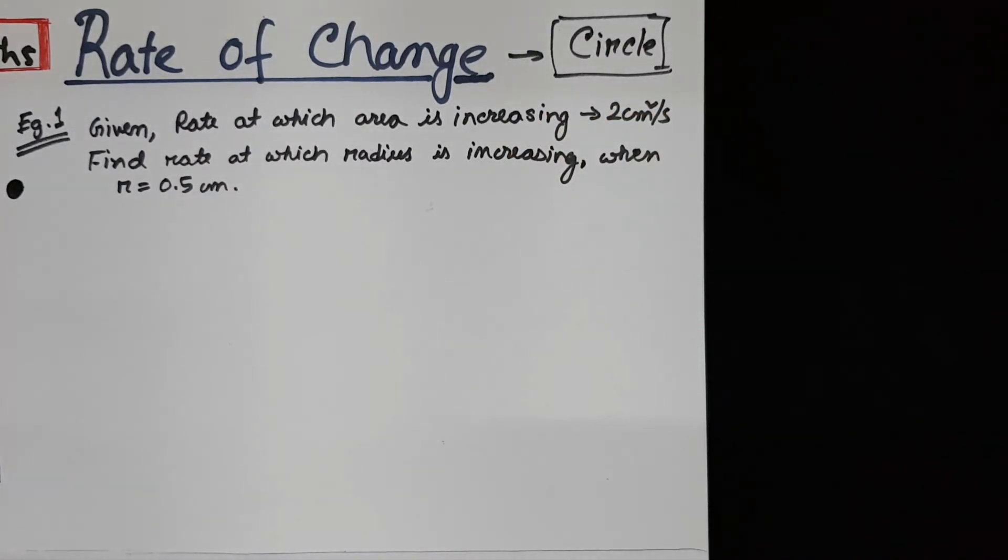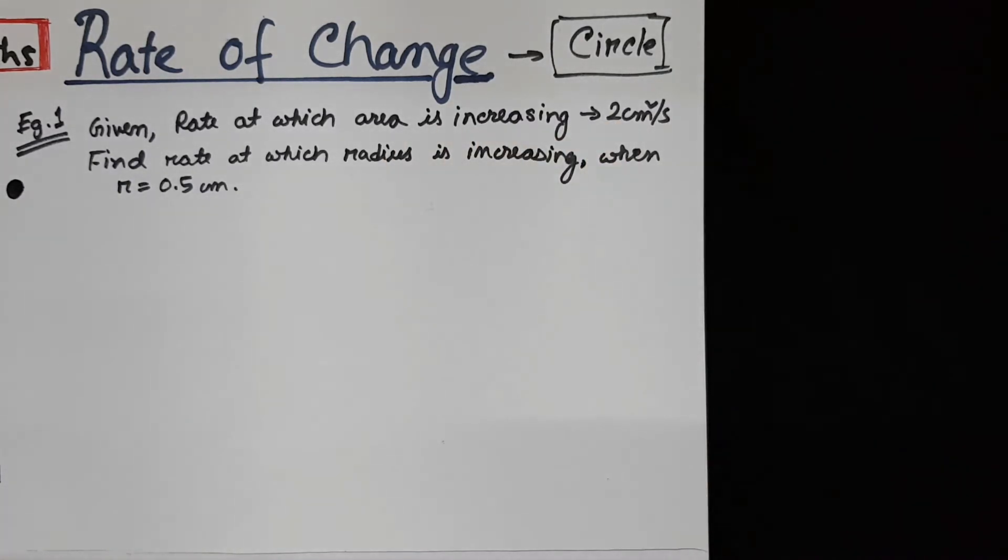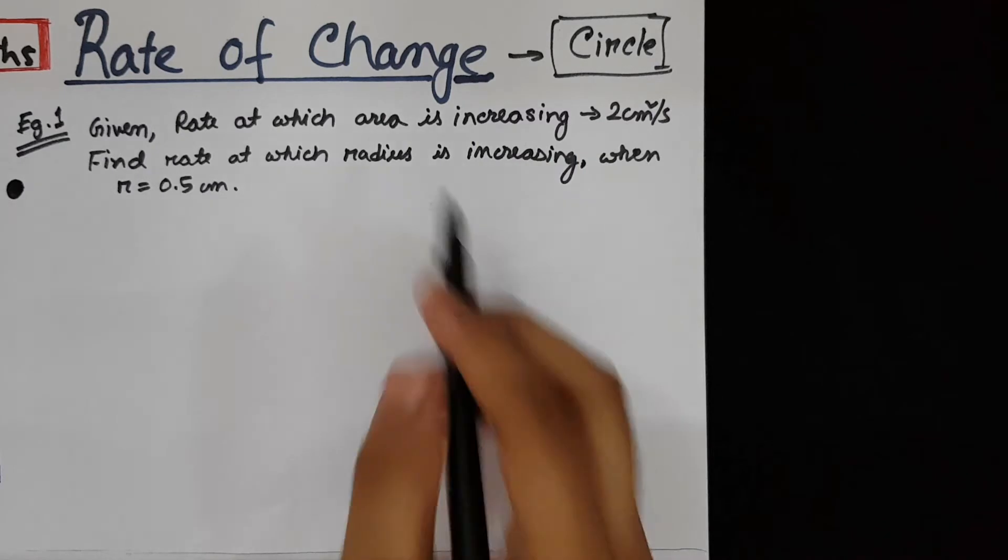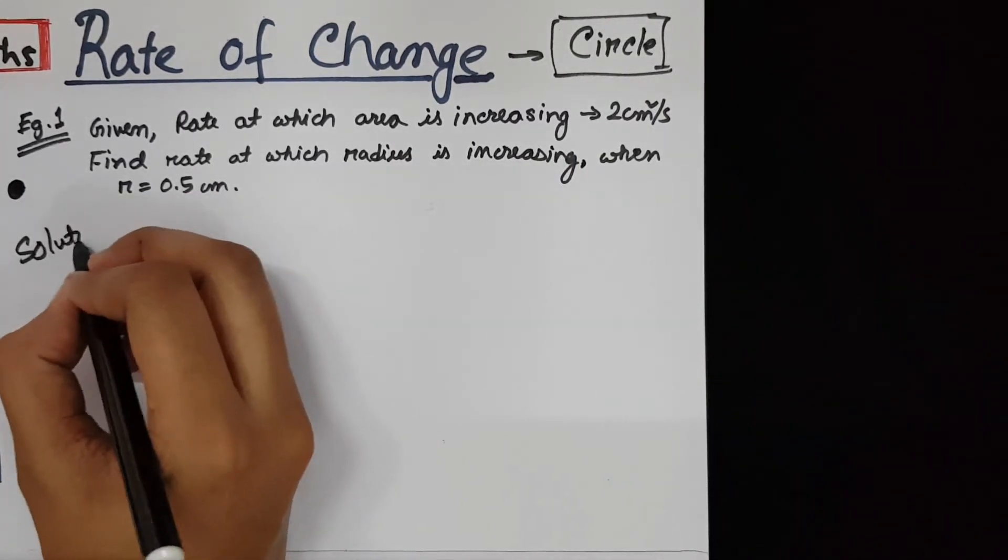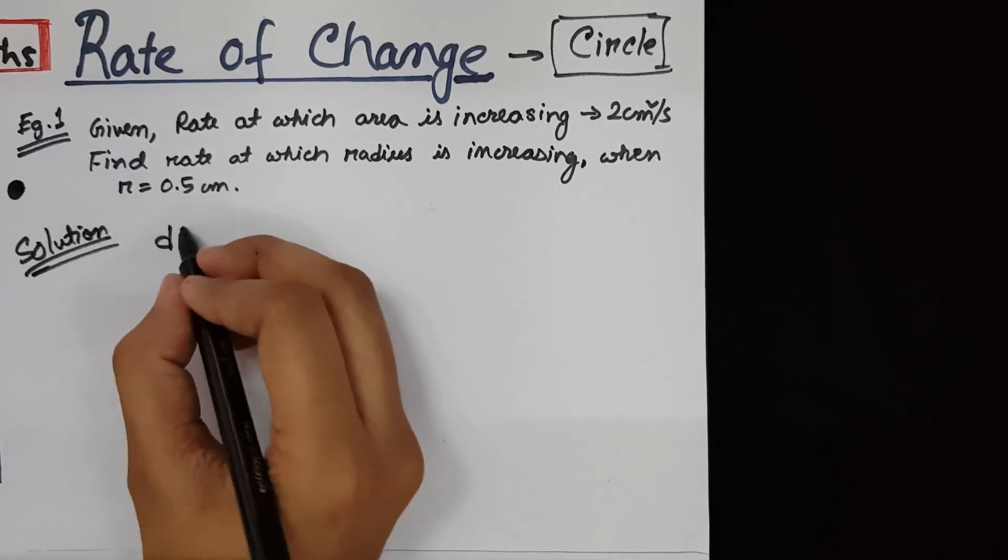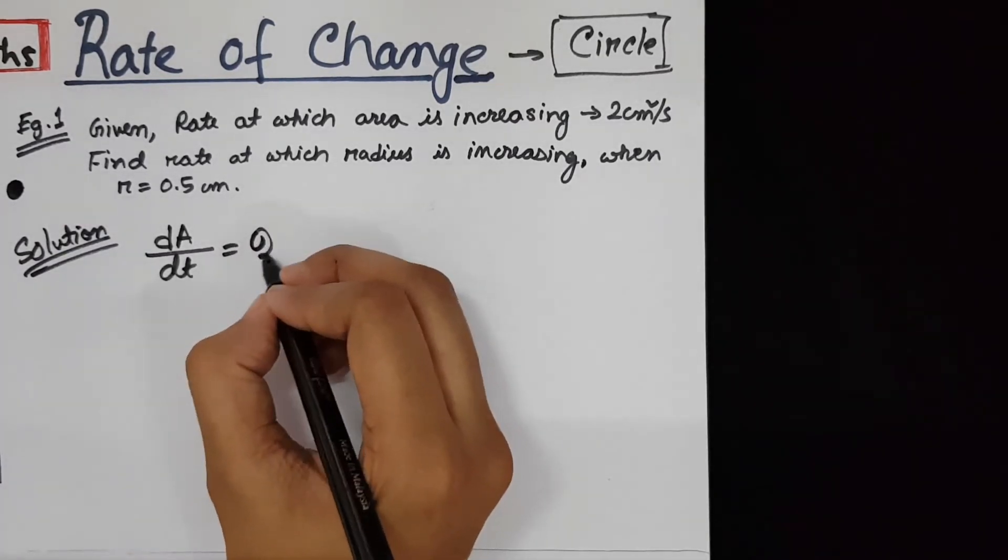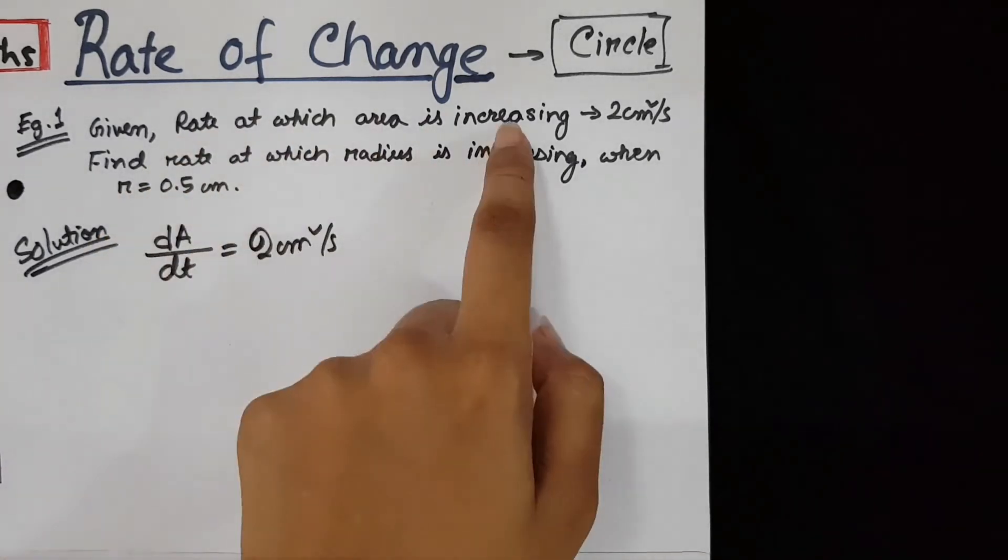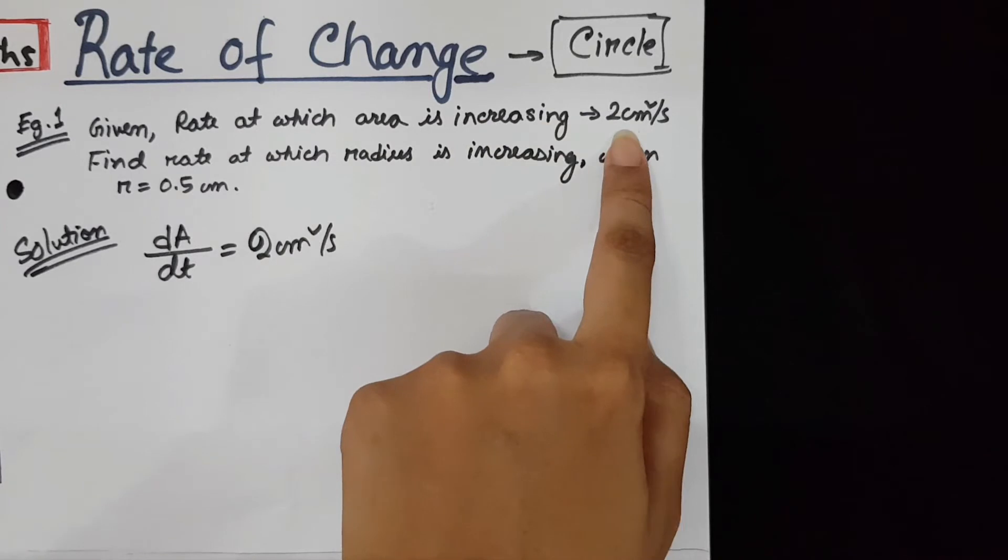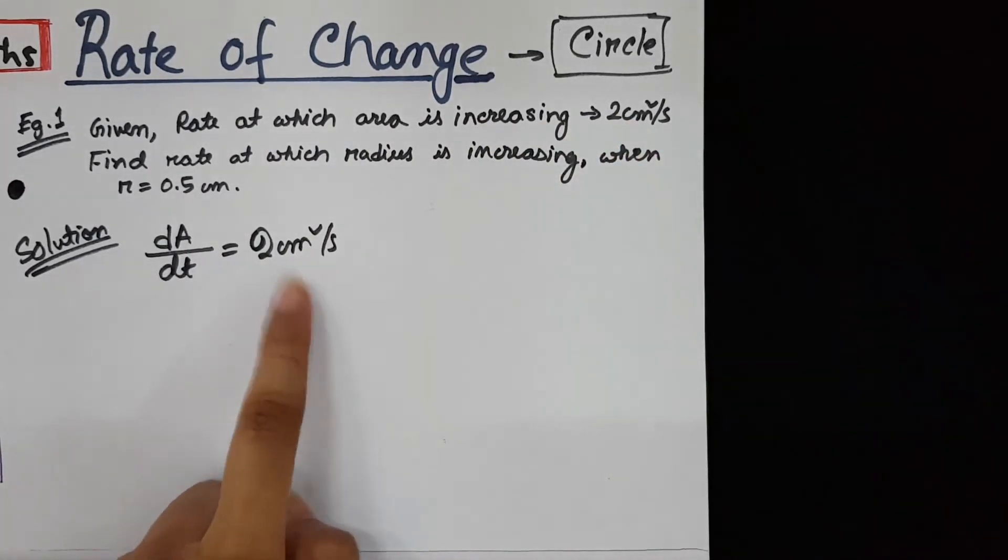So if the question is the rate at which area is increasing is 2 cm per second. It means since it is about area, the given equation is dA/dt. That is 2 cm² per second. Even if you do not understand the whole thing, you can just look at the unit since it is cm² per second. So it has to be area.